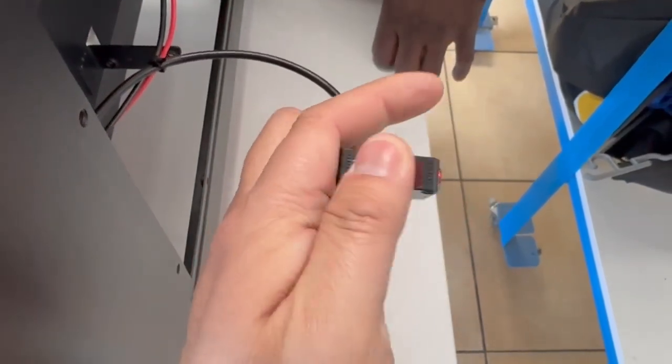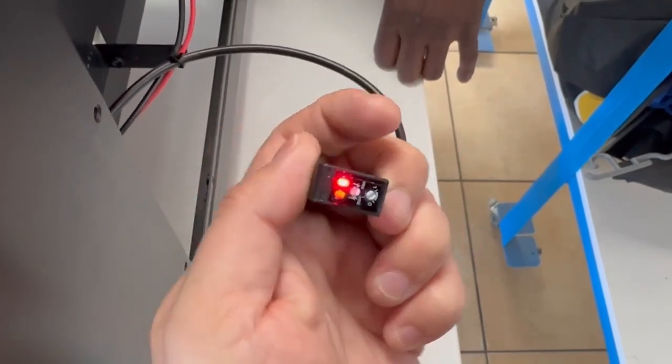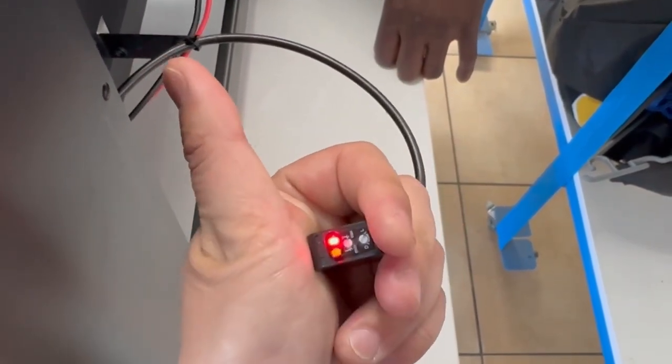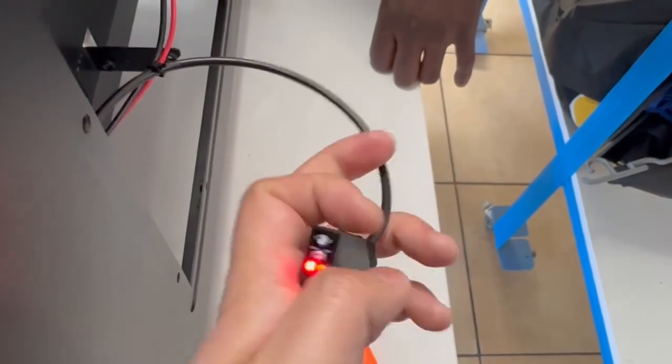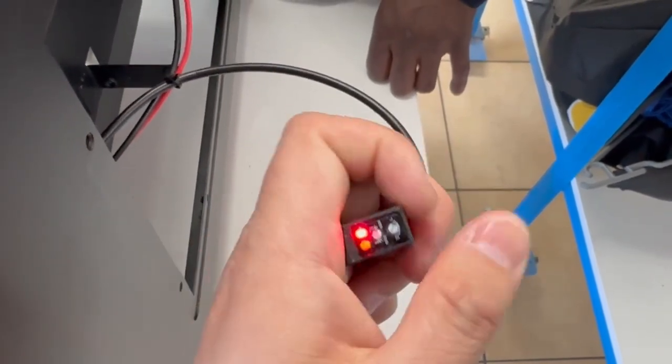So basically that's how the sensor works. And if it's totally broken, this means never re-trigger or always trigger, then it's broken. Then you need to change. You can go buy this to replace it.